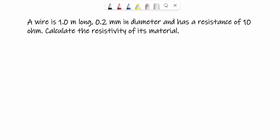The second question says that a wire is 1 meter long, 0.2 mm in diameter, and has a resistance of 10 ohm. Calculate the resistivity of its material. So first write all the things which are there in the equation: l is 1 m.